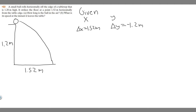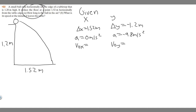Next, we write down the acceleration. The acceleration in the x direction, unless specified differently, is generally assumed to be 0 meters per second squared. In the y direction, we assume it's the force of gravity, so minus 9.8 meters per second squared. For initial velocities, since the ball is rolling horizontally, the initial velocity in the y direction is 0 meters per second — there's no y component. The initial velocity in x, v sub 0x, is what we're trying to find for Part B.